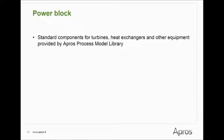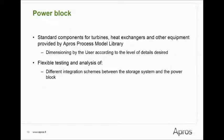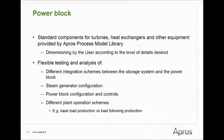The APROS process component model library provides standard components for turbines, heat exchangers and other equipment needed for the heat exchanger train and power block modeling. The inputs of the process component models include the physical dimensions and basic correlations, and these are given according to the level of detail desired in a specific model. The model is a flexible tool for the testing and analysis of different integration schemes between the storage system and the power block, different steam generator configurations, power block configurations and controls, and different plant operation schemes, such as base load production versus load following production.